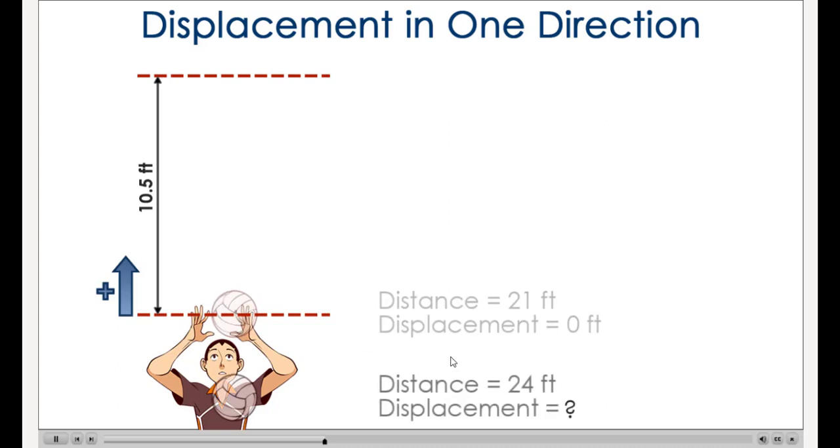If the ball falls below the starting position and travels an additional 3 feet down, the distance the ball travels is 24 feet. What is the displacement when the ball is in this position? The displacement of the ball in this position is negative 3 feet or down 3 feet. The displacement is negative because the position is in the opposite direction that we defined as positive from the starting position. Remember, we defined up as positive.